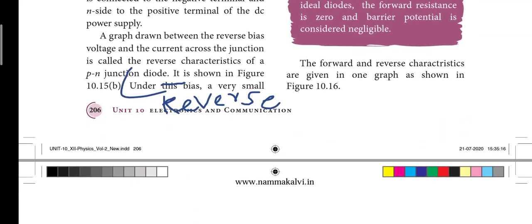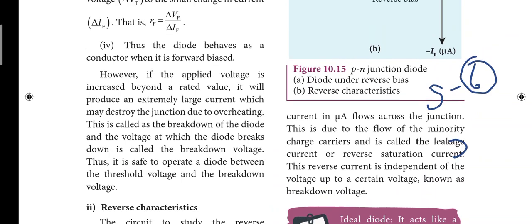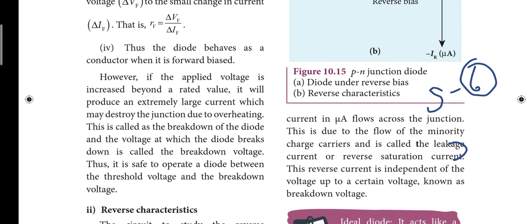Next, page number 206. In the left side, the last line is under this bias. Under reverse bias. In the next page, the saturation current is completed. This is the 6th short answer.